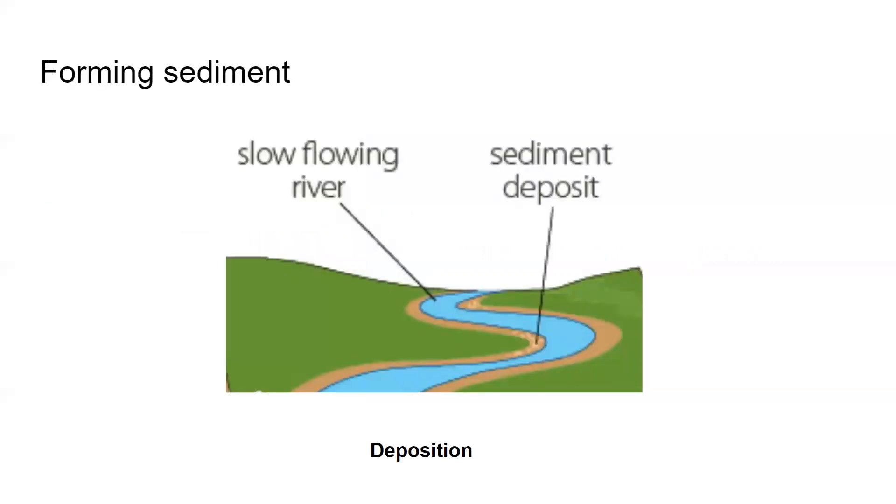The speed of a river or stream depends on how steep the slope is and how much water is in the river. A fast flowing river can carry large rocks. A slow flowing river can only carry small rock fragments.